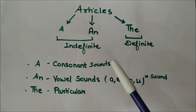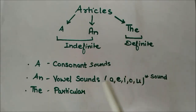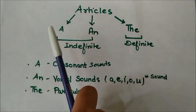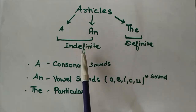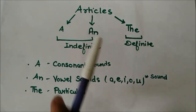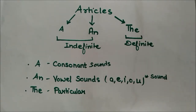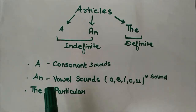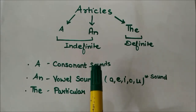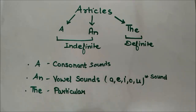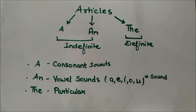Before we start, let me give you a brief review of what we know about articles. Articles are basically of two types: indefinite and definite. When we talk about indefinite type we mean 'a' and 'an', and when talking about definite type we mean 'the'. Remember, 'a' is used with consonant sounds and 'an' is used with vowel sounds — that is, sounds of a, e, i, o, and u. Go with the sound, not with the letter.